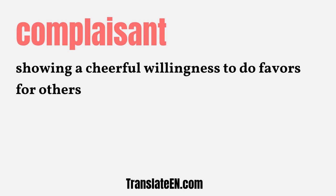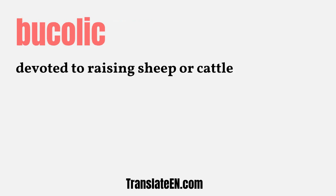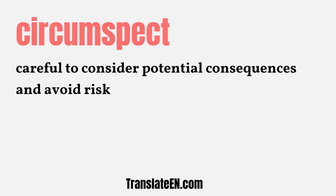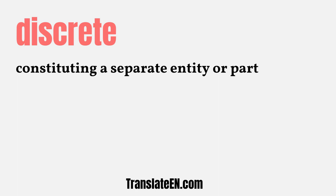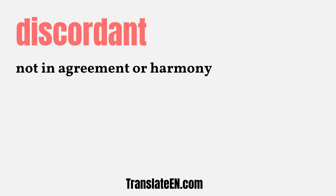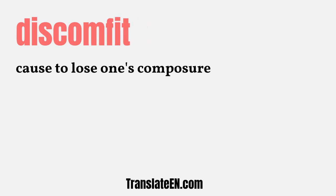Complacent: showing a cheerful willingness to do favors for others. Bucolic: devoted to raising sheep or cattle. Circumspect: careful to consider potential consequences and avoid risk. Discreet: constituting a separate entity or part. Discordant: not in agreement or harmony. Discomfit: cause to lose one's composure.